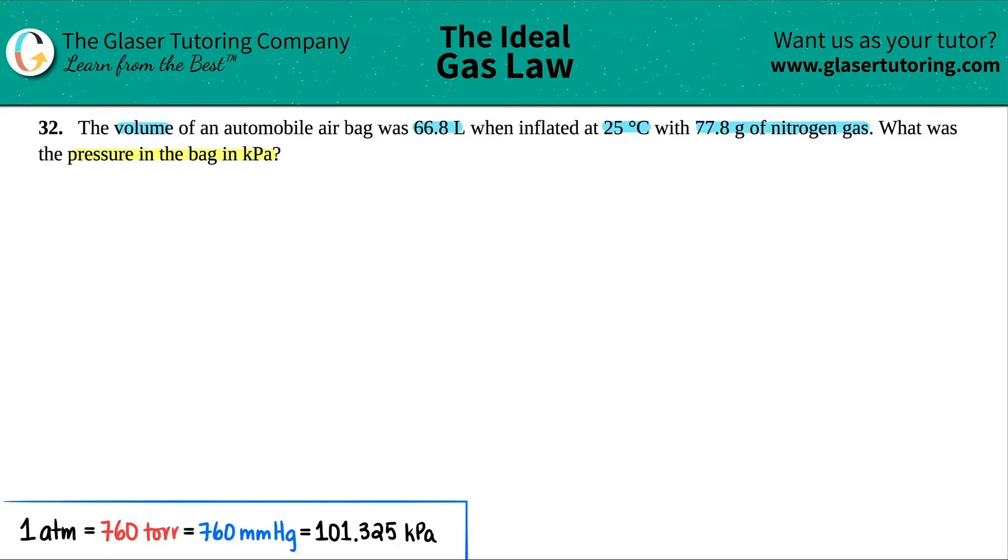Okay, so let's first figure out which formula we're going to use. With the gas chapter, it's a little bit tricky because there's a lot of different formulas. The easiest way to go about this is list out your variables. So let's just read it again and list out the variables. They said that we had a volume of 66.8 liters. So I know that I have a V, a volume. V equals 66.8 liters.